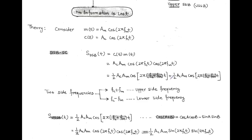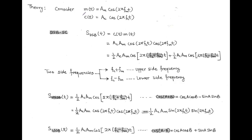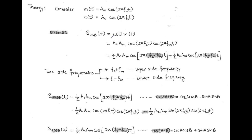We are now going to derive mathematically the equation of single sideband. For this, we consider a message signal and a carrier signal. Both are sinusoidal, but the frequency of the carrier is very much larger compared to the message signal. To obtain single sideband, we consider the double sideband suppressed carrier wave, which equals the product of the carrier and message signal. Putting in the values, we get: A_C · A_M · cos(2π·f_C·t) · cos(2π·f_M·t).